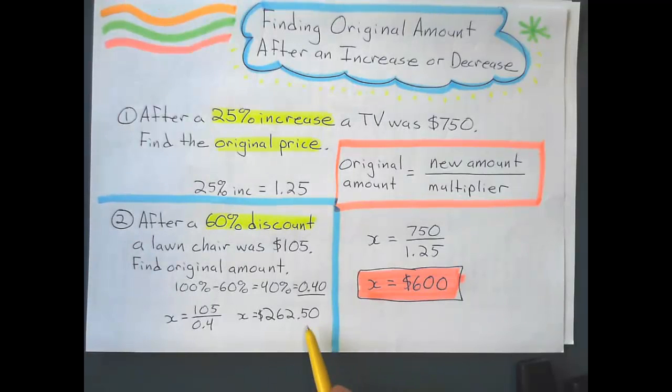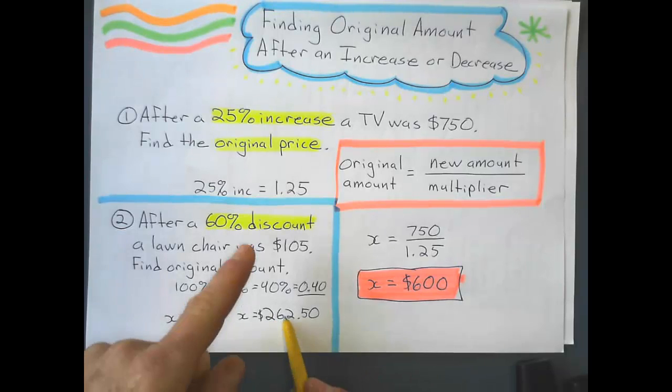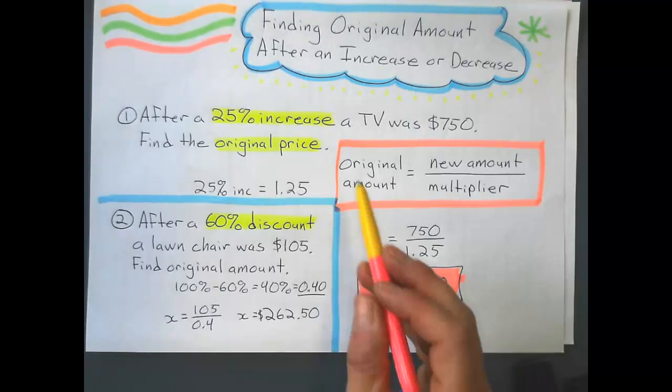So that's kind of how we check it. We say, okay, is the original amount more or less? Well, it better be more if it's been discounted. And it better be less if it's been increased.